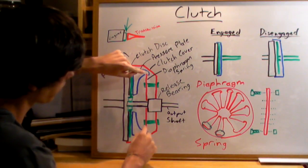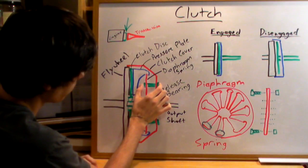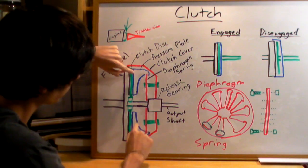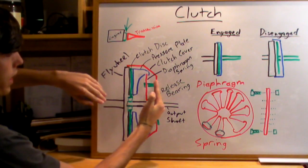This red diaphragm spring, which with these little bolts right here, acts as a pivot point, and it pulls this blue pressure plate away from the clutch.